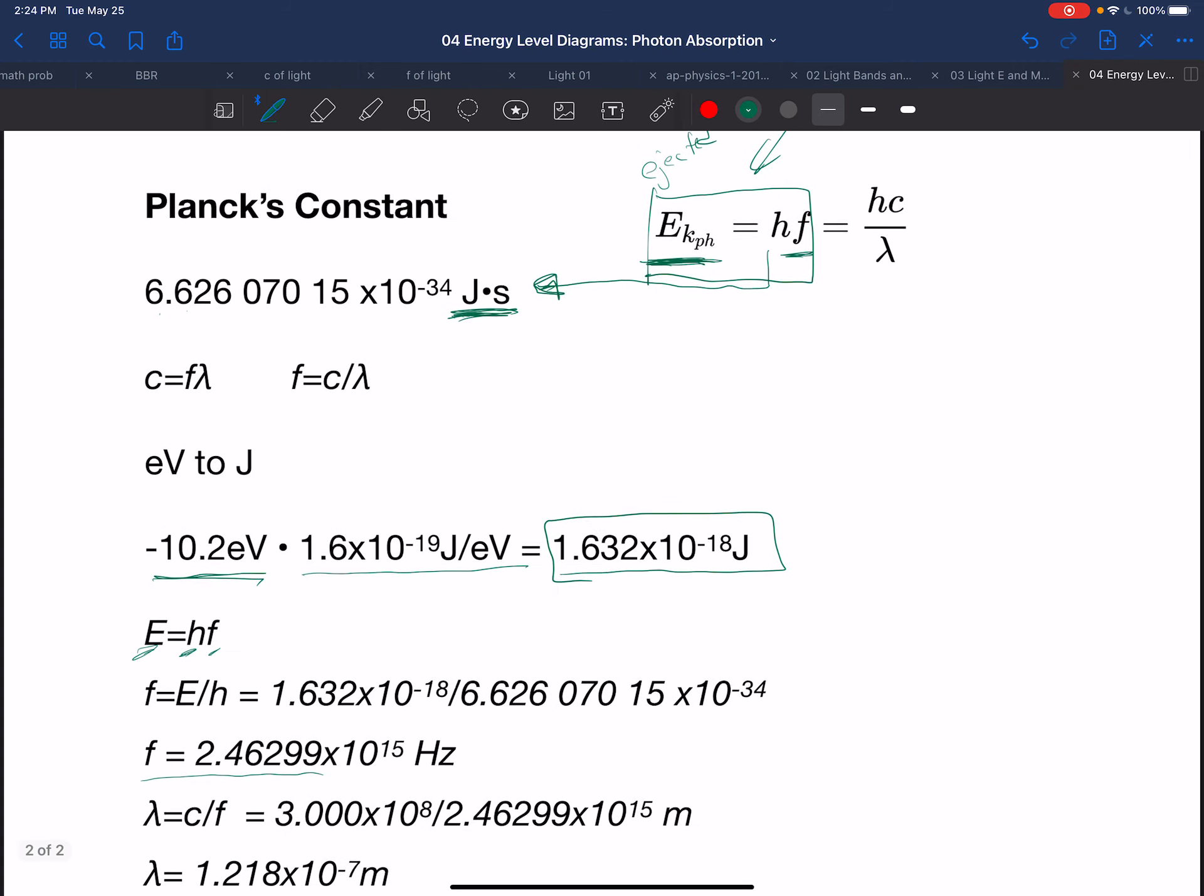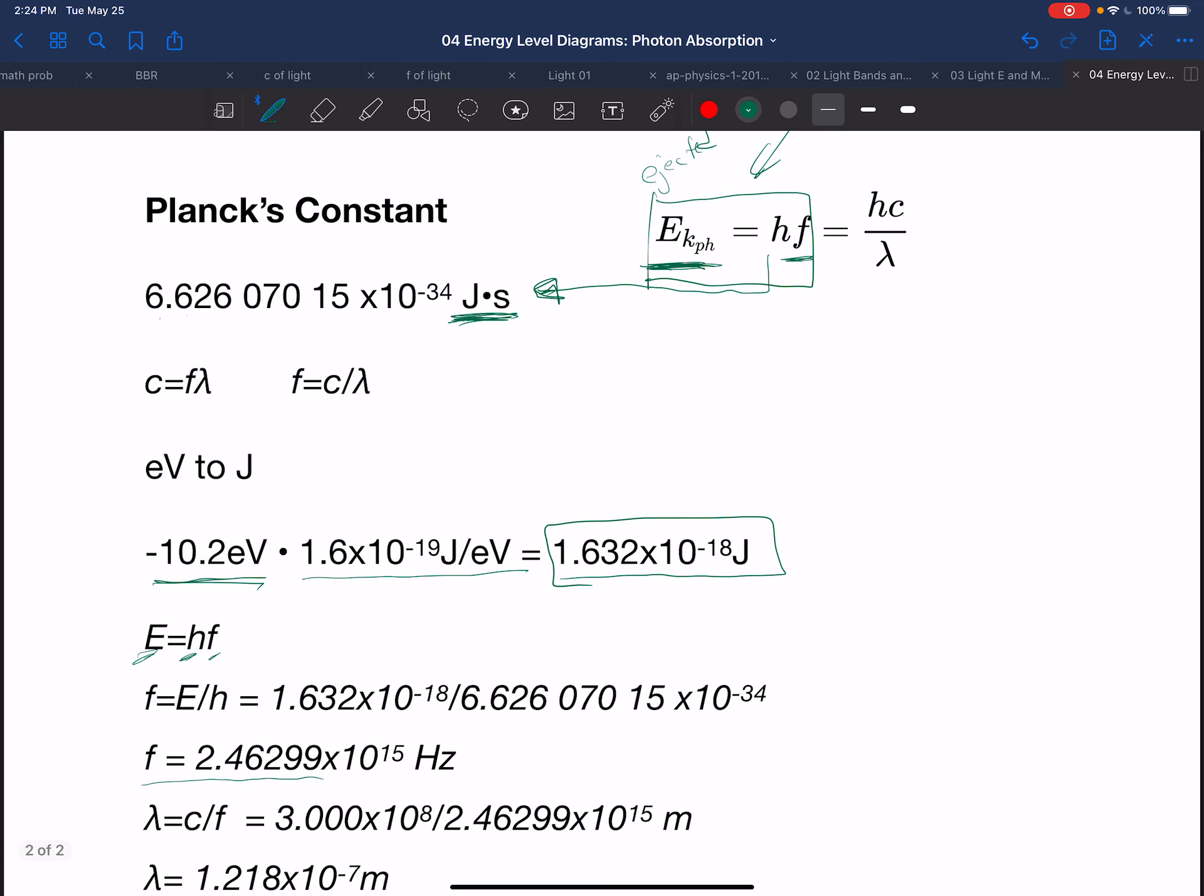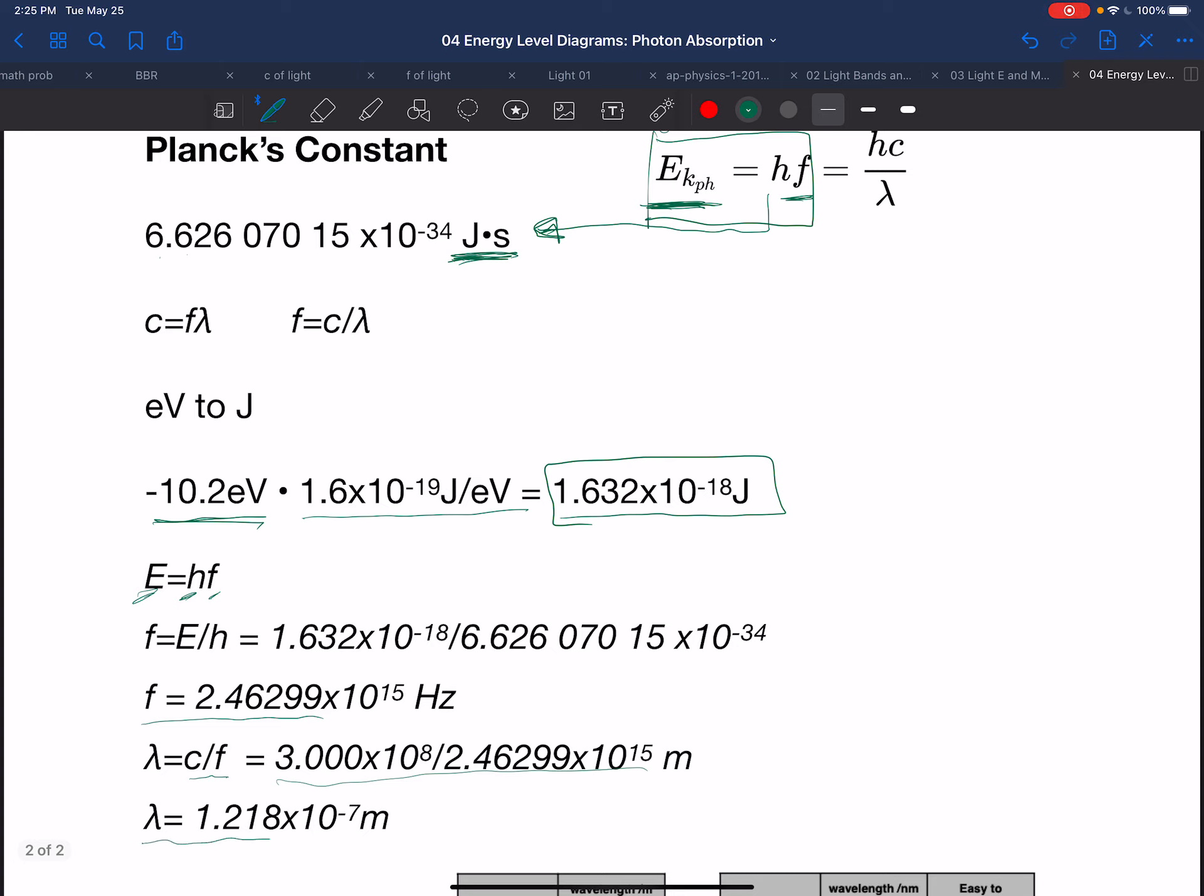Now, if we know the frequency, we can find the wavelength. And the wavelength, then, is the speed of light over the frequency, which gives us a wavelength of 1.21 times 10 to the minus 7th meters.